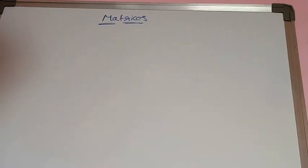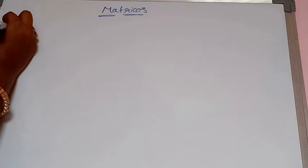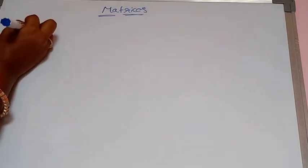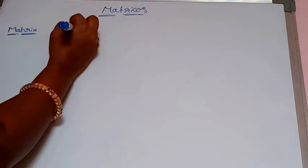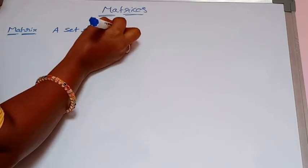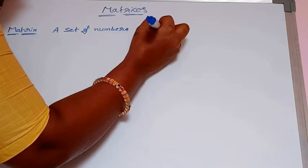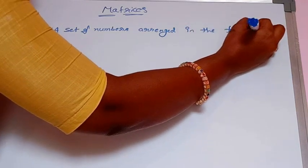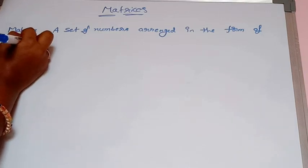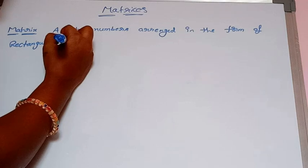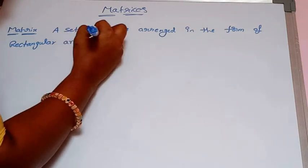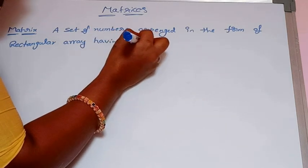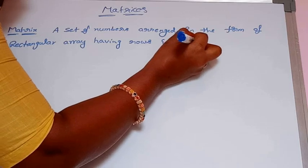Good morning to one and all. I would like to explain a small topic on matrices. First of all, what is meant by a matrix? A matrix is nothing but a set of numbers arranged in the form of a rectangular array having rows and columns.